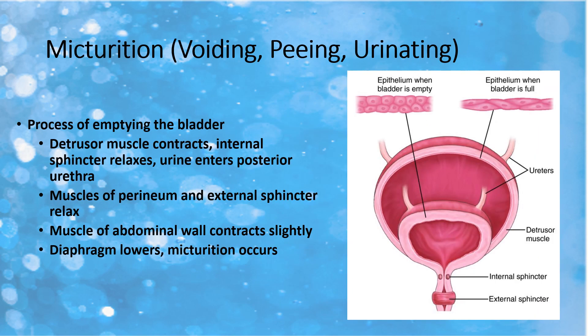The medical term for urinating or voiding is micturition. Micturition is controlled by the bladder and its unique muscular design. The bladder is composed of three layers of muscle tissue called the detrusor muscle: the inner longitudinal layer, the middle circular layer, and the outer longitudinal layer. These layers sense the amount of urine in the bladder by determining how much the epithelial layer has been stretched. When stretched, the detrusor muscle contracts, the internal urethral sphincter relaxes to allow urine to flow, the perineal muscle relaxes, causing the external sphincter to relax, the abdominal wall muscles contract, the diaphragm lowers, and urine exits through the urethra.